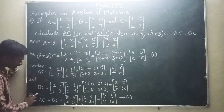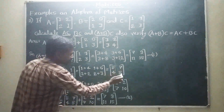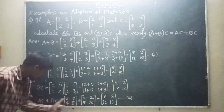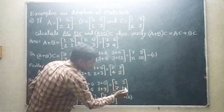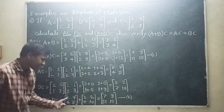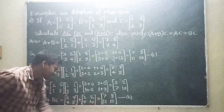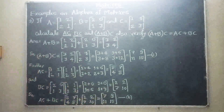Adding A into C plus B into C: A into C matrix is 5, 7, 4, 5 plus B into C matrix 2, 2, 7, 10. Adding corresponding elements: 5 plus 2 equals 7, 7 plus 2 equals 9, 4 plus 7 equals 11, 5 plus 10 equals 15. This is equation number 2. From equation number 1 and equation number 2, both give 7, 9, 11, 15. Therefore A plus B into C is equal to AC plus BC.